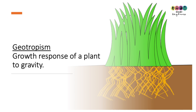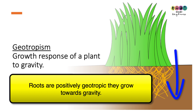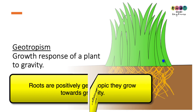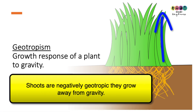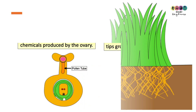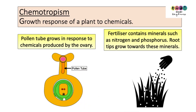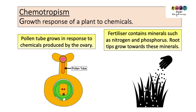Geotropism is defined as the growth response of a plant to gravity. Roots grow towards gravity — they're positively geotropic — but shoots grow away from gravity, so they're negatively geotropic. Chemotropism is the growth response of a plant to chemicals. An example is the pollen tube in sexual reproduction of a flowering plant: the pollen tube grows down into the style towards the ovule in response to chemicals produced by the ovary. If you spray fertiliser on your grass and water it, the roots will grow down towards those minerals — the nitrogen and the phosphorus.